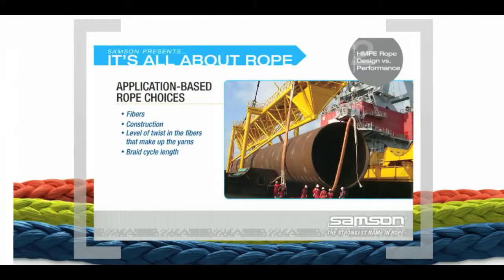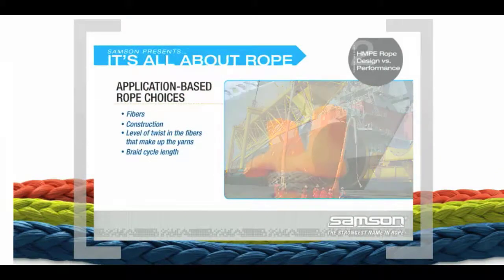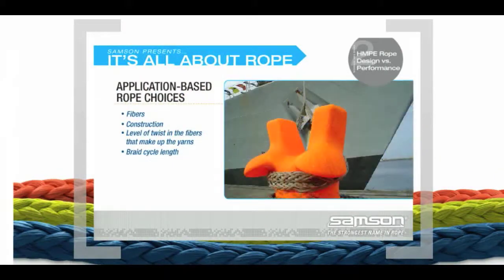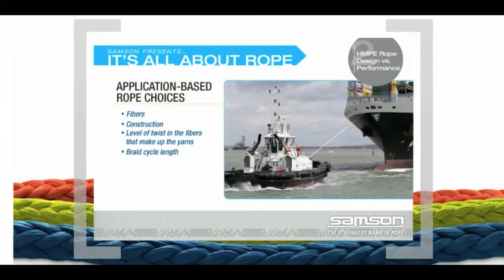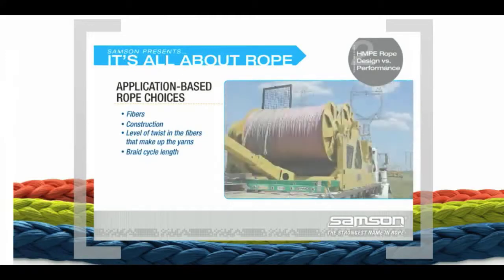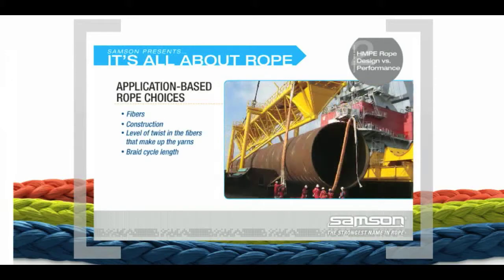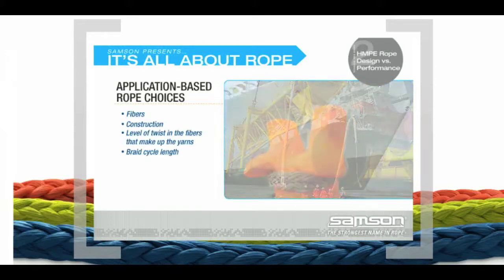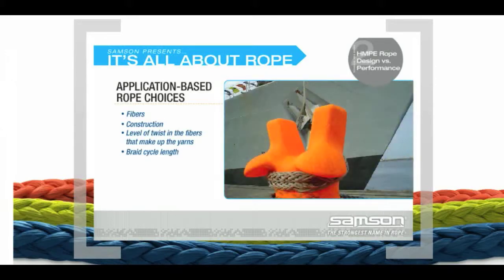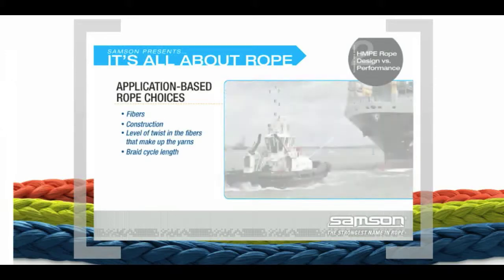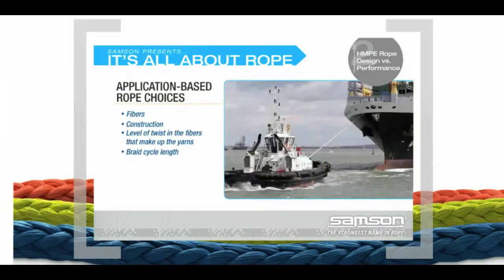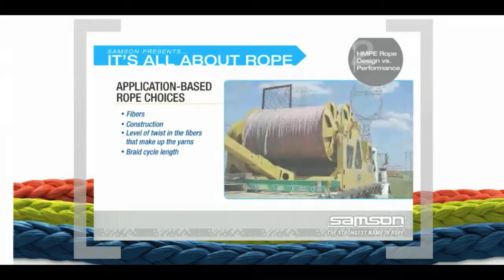Based on the application, the engineer chooses the fibers to be included in the rope, the construction of the rope — twisted or braided — the number of strands, single braid or double braid, the level of twist in the fibers that make up the yarns, even the braid cycle length. Each has an effect on the performance and service life of the rope.